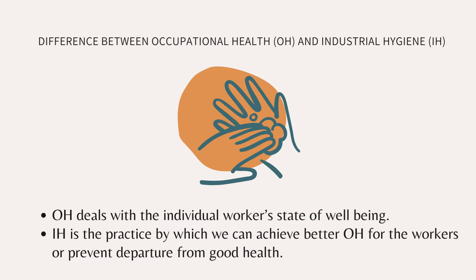IH helps prevent departure from good health — the better the industrial hygiene, the better will be the occupational health. OH deals with the well-being of the worker individually, while IH deals with the overall well-being of workers. When industrial hygiene is better, workers in the premises will have a safe working environment and will be able to protect themselves individually.